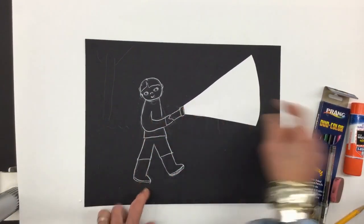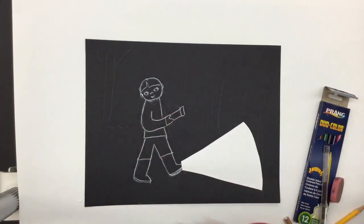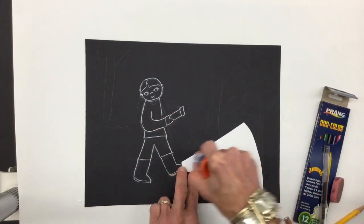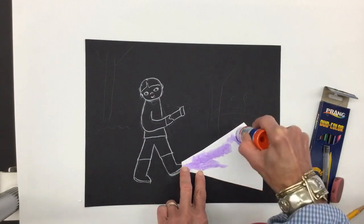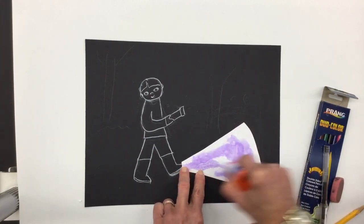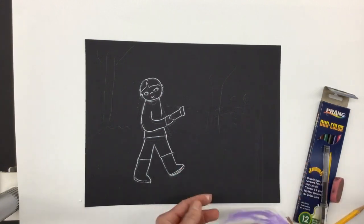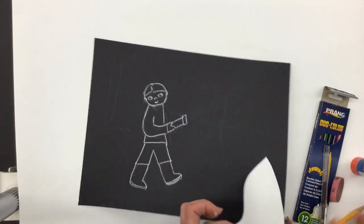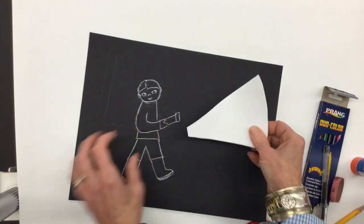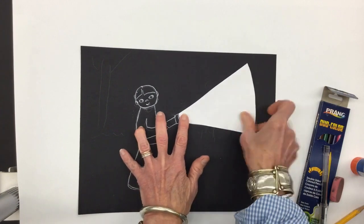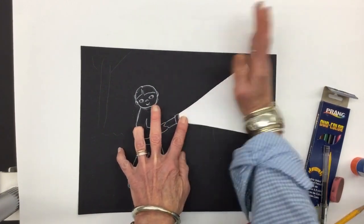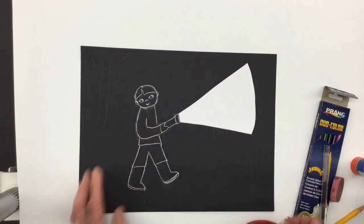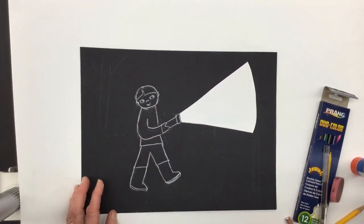So I like how that looks. There he is walking. There's his flashlight. So I'm going to glue my flash of light down, so I don't have to worry about it sliding around. Put that down, rub it down with your clean fist, and now the fun begins.